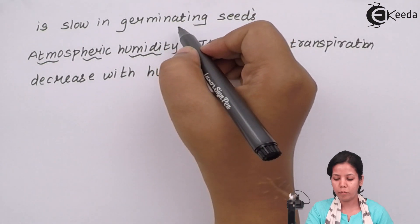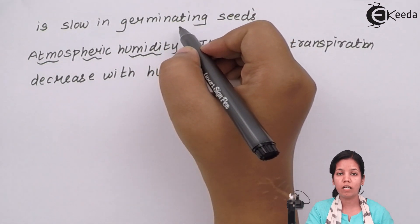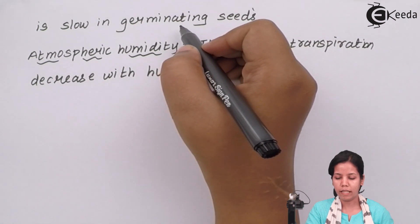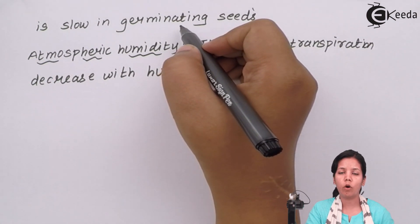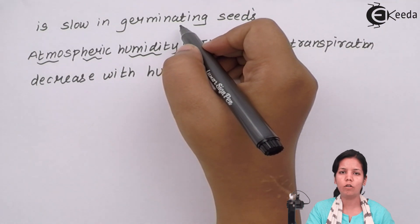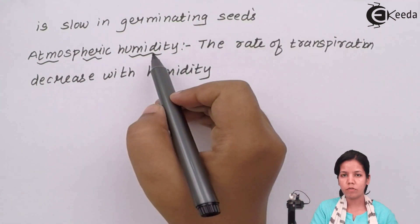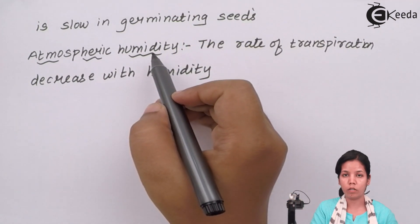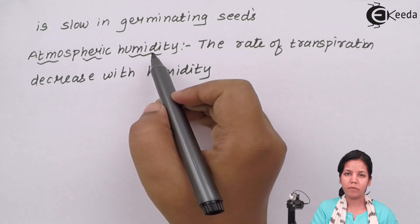In slow germinating seeds or seeds which are gradually growing, transpiration would be very low. Obviously if there is a seed which is still growing how well it will be able to transpire since there are no leaves present. Apart from that atmospheric humidity or presence of water molecules can hamper transpiration process.